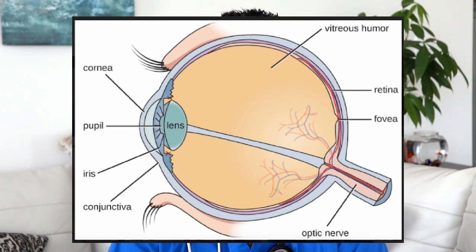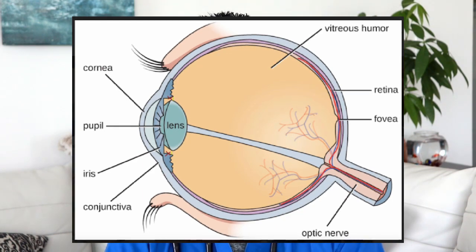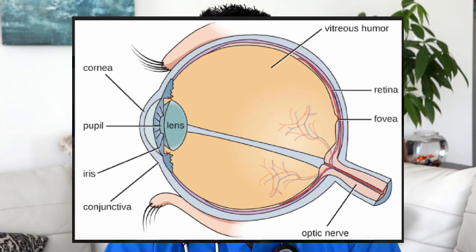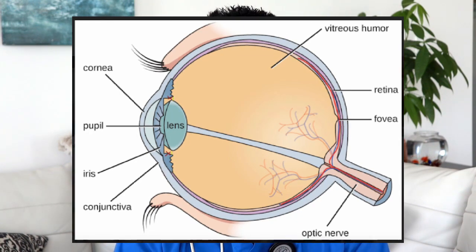Normally, as mentioned, it's clear. Conjunctivitis — whenever you add '-itis' to anything, it just means that it's inflamed. So conjunctivitis is inflammation of your conjunctiva.